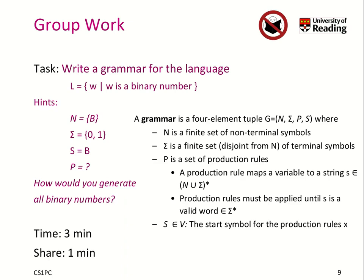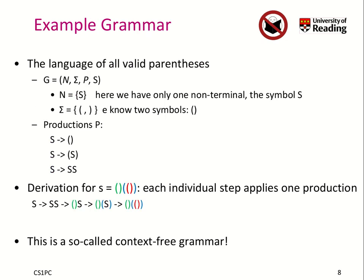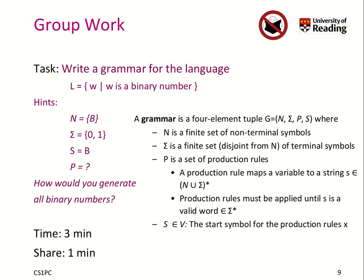Think about the following task: write a grammar for a language where a word is a binary number. A binary number consists of zeros and ones, so our alphabet is just zero and one. As a hint, it suffices to have a starting symbol B and just one non-terminal, which is B again. Using similar rules as those shown, we can generate any binary number.